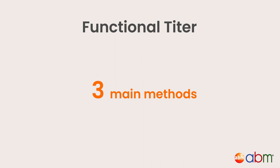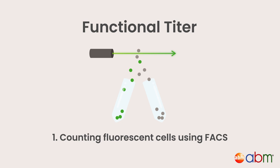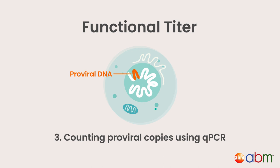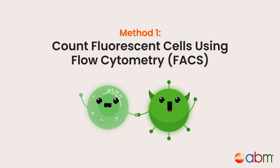Functional Titer. The three main methods for determining functional titer are: one, counting fluorescent cells using flow cytometry or FACs; two, counting antibiotic resistant colonies; and three, counting proviral copies using qPCR. Let's briefly go through each method.